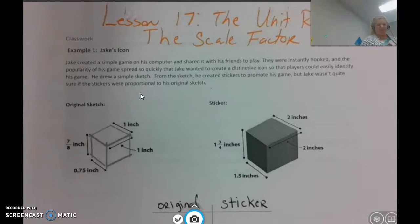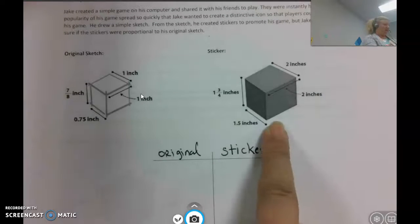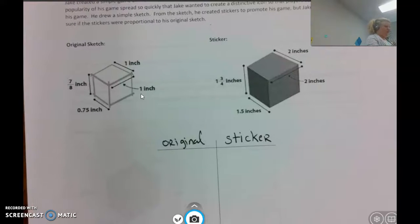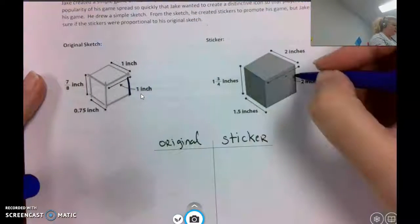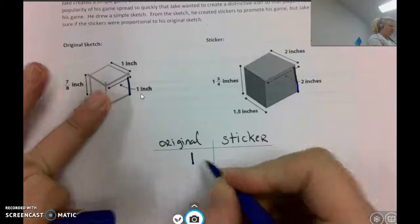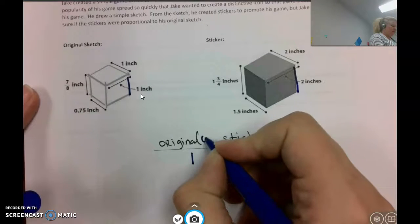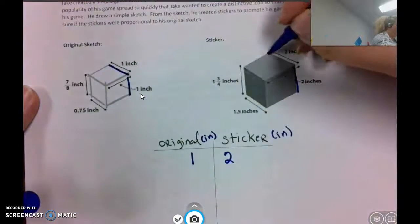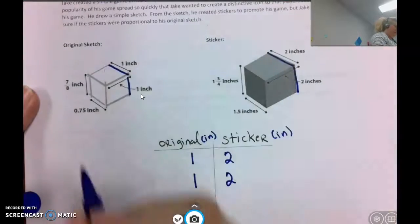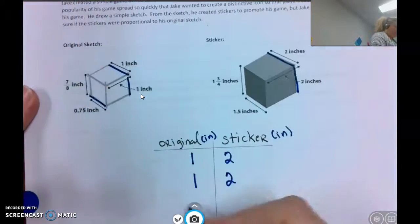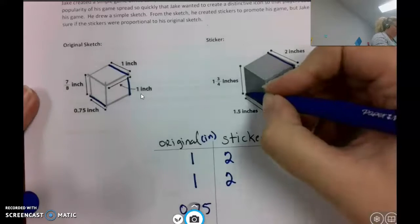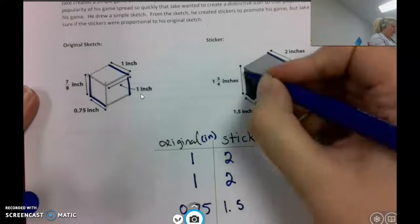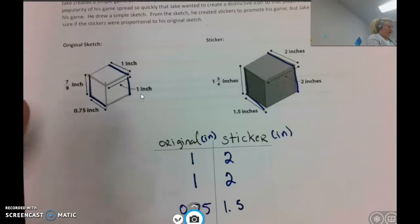In order to determine if the stickers are proportional to the original sketch, we are just going to first record our matching parts corresponding as the correct math term. The original would be 1, and the 2 is there all in inches. 2 is on the sticker. Now we'll look at this piece, it's 1 to 2. What else do we have? 0.75 to 1.5, and finally, 7 eighths to 1 and 3 fourths.